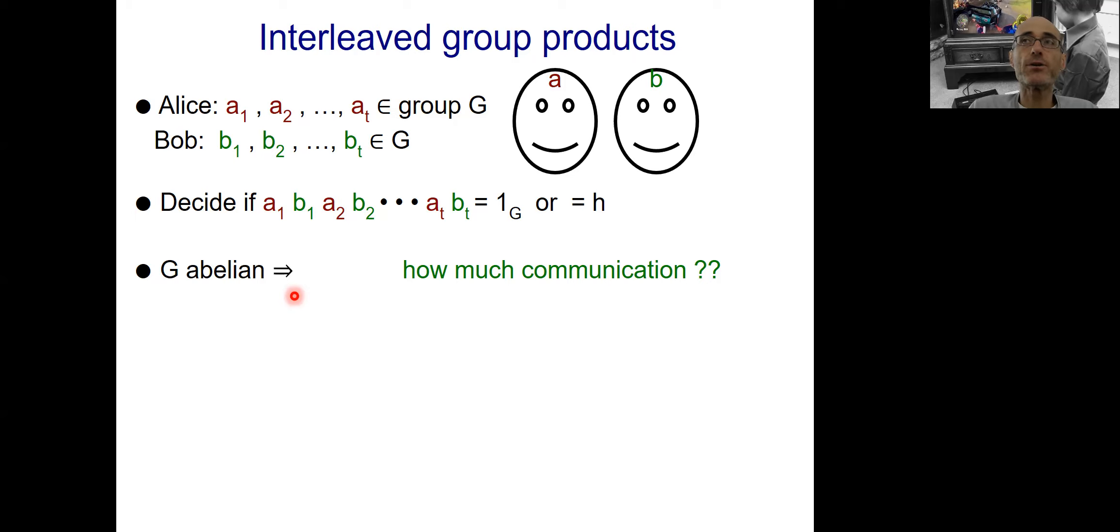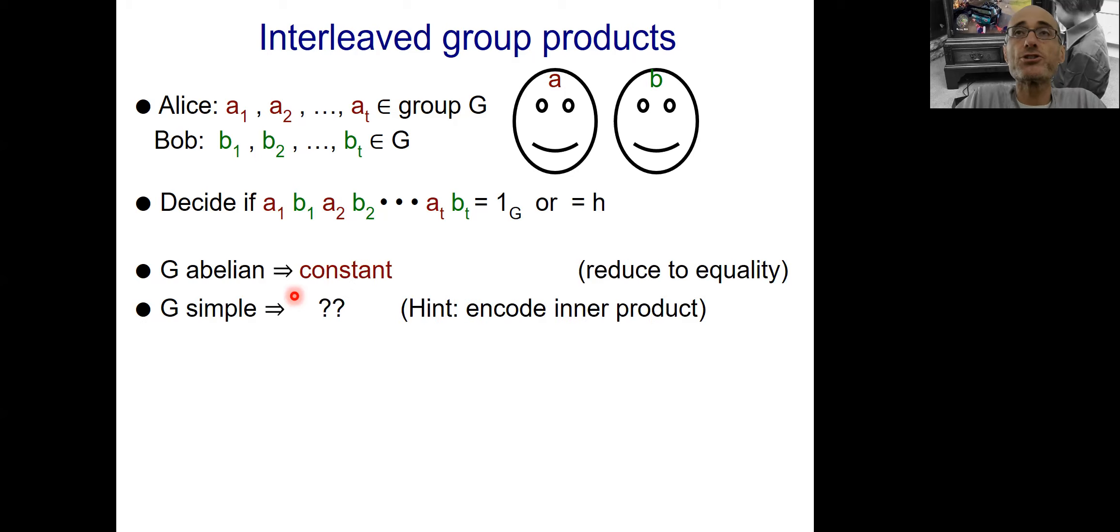And in this case, the communication is constant. I allow randomization in the model, so you can just reduce to equality, right? Because if the group is abelian, I can just permute these elements. So I have first the product of the a's, then the product of the b's, equal to 1. So Alice and Bob can compute the products in their heads, and they can just essentially check equality of these two. So if G is abelian, this problem is very easy. The communication is constant.